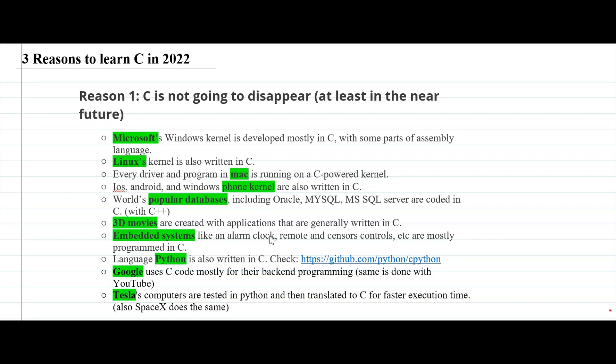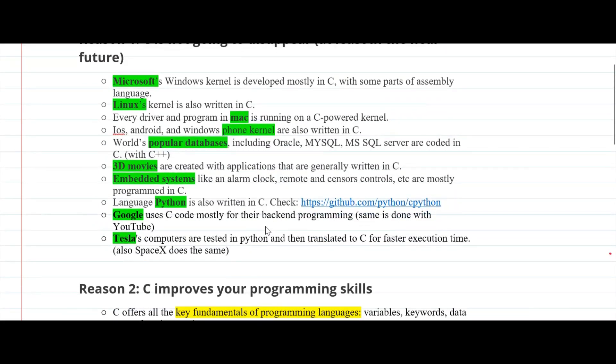3D movies are created with applications that are generally written in C. Embedded systems are also using C. Even modern programming languages like Python are written in C. Google uses C code mostly for their backend programming. The same is true for YouTube. Tesla's computers are tested in Python and then translated to C for faster execution time. SpaceX also does the same.